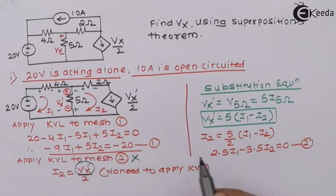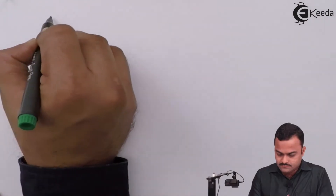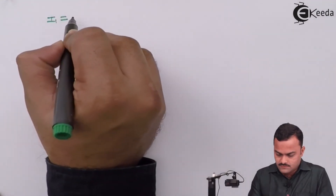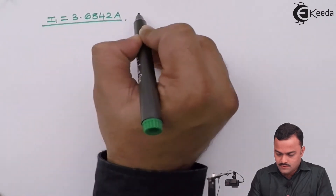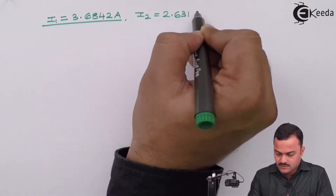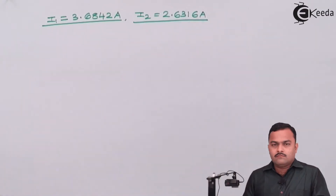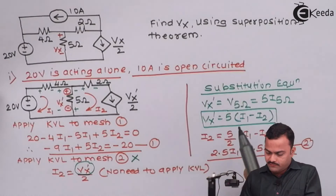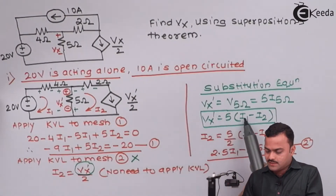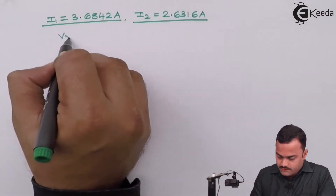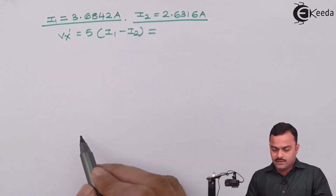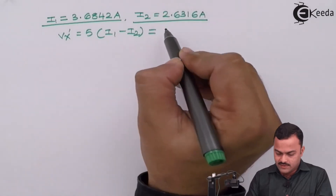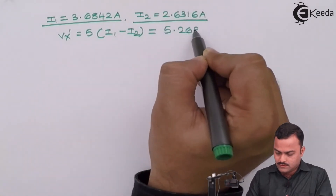Solving these two equations gives us I1 as 3.6842 amperes and I2 as 2.6316 amperes. We want Vx dash, which is 5·(I1 minus I2). Substituting the values of I1 and I2 gives Vx dash equal to 5.263 volts.